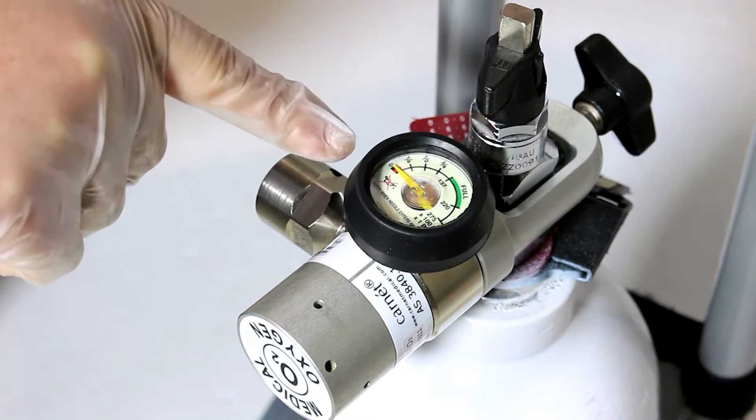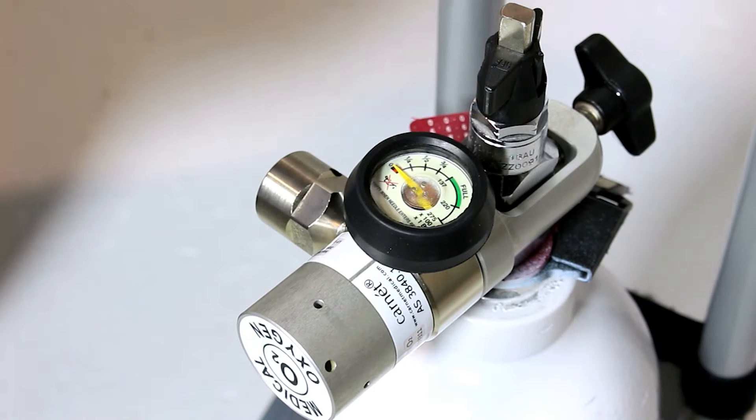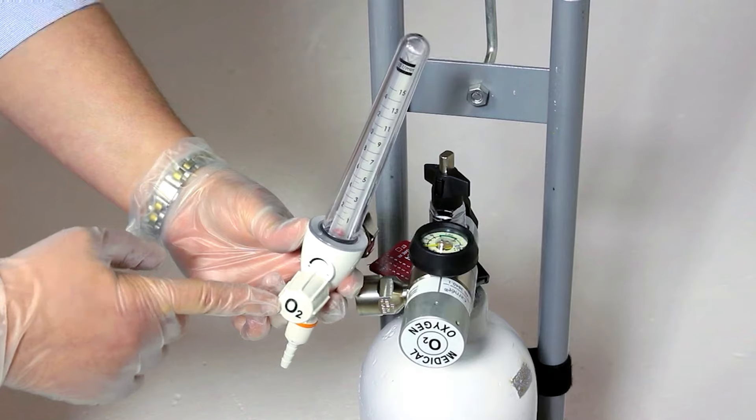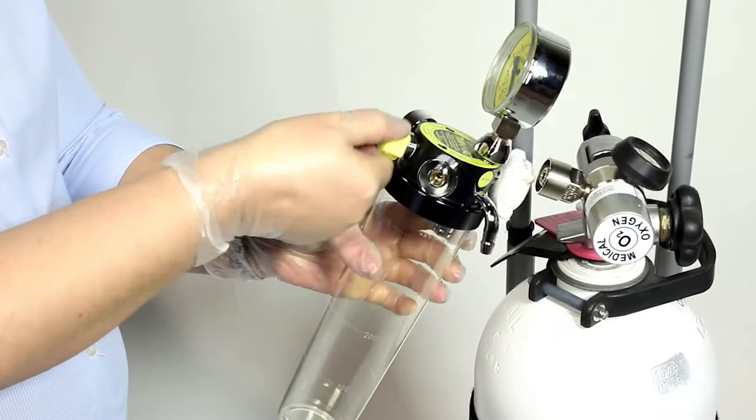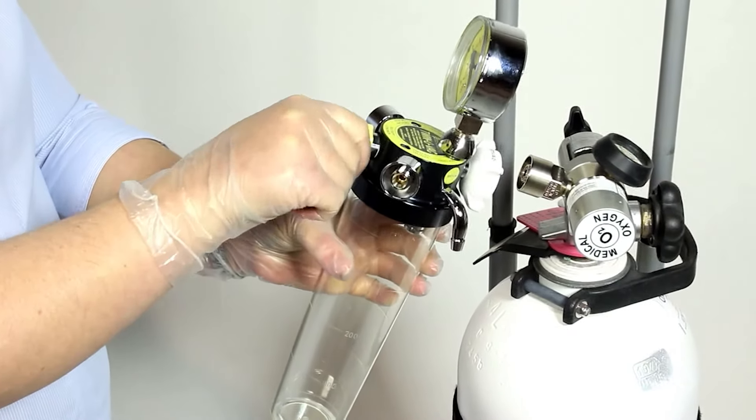The gauge on the regulator will show as empty, as you have not yet opened the cylinder. The regulator is now ready for attaching further equipment, such as flow meters and suction devices.